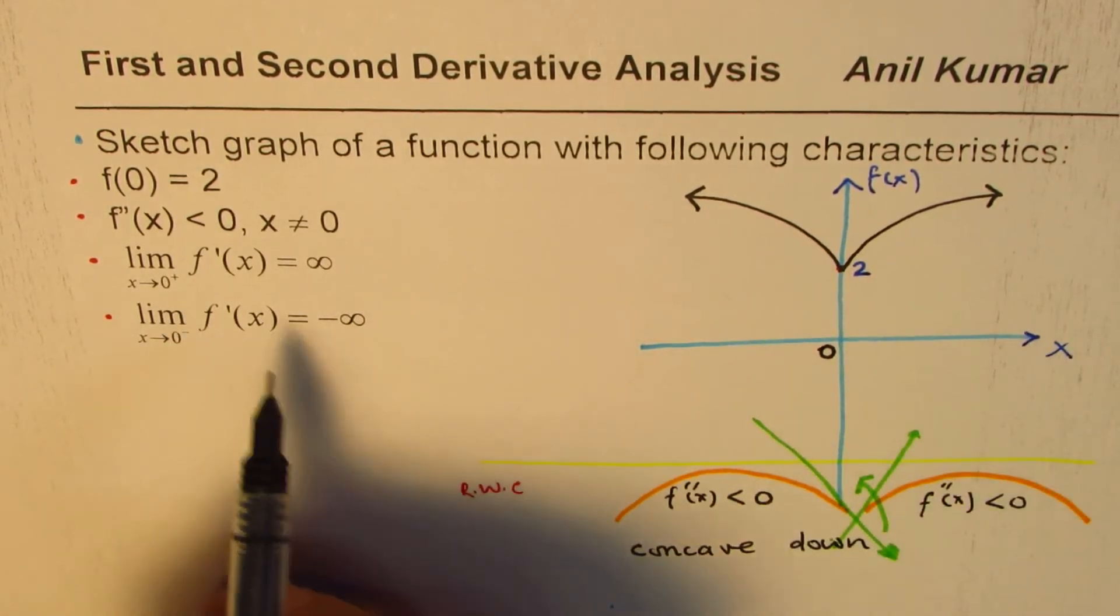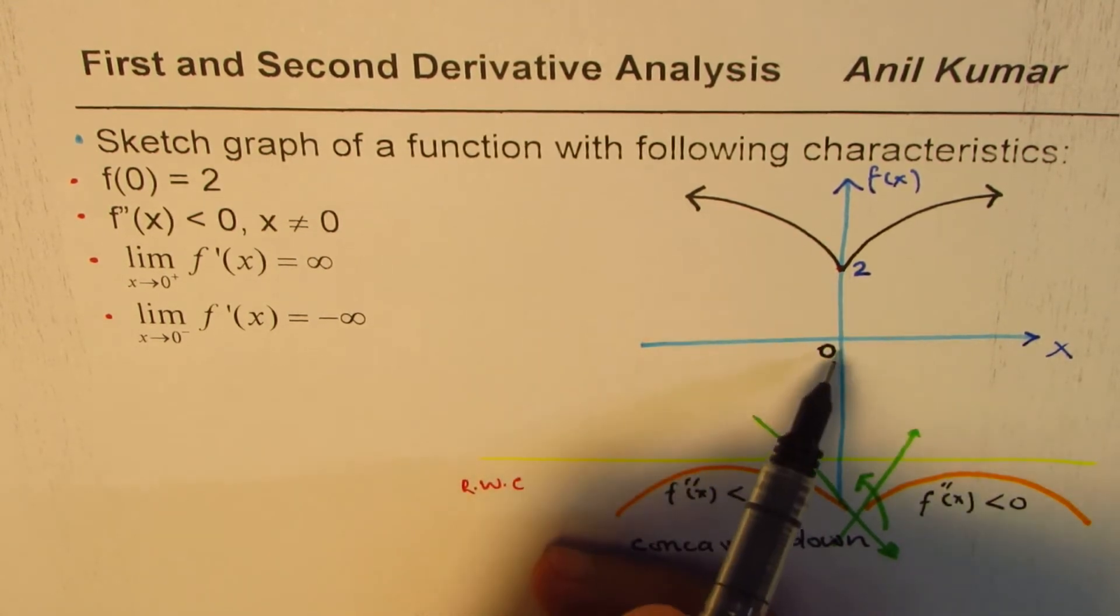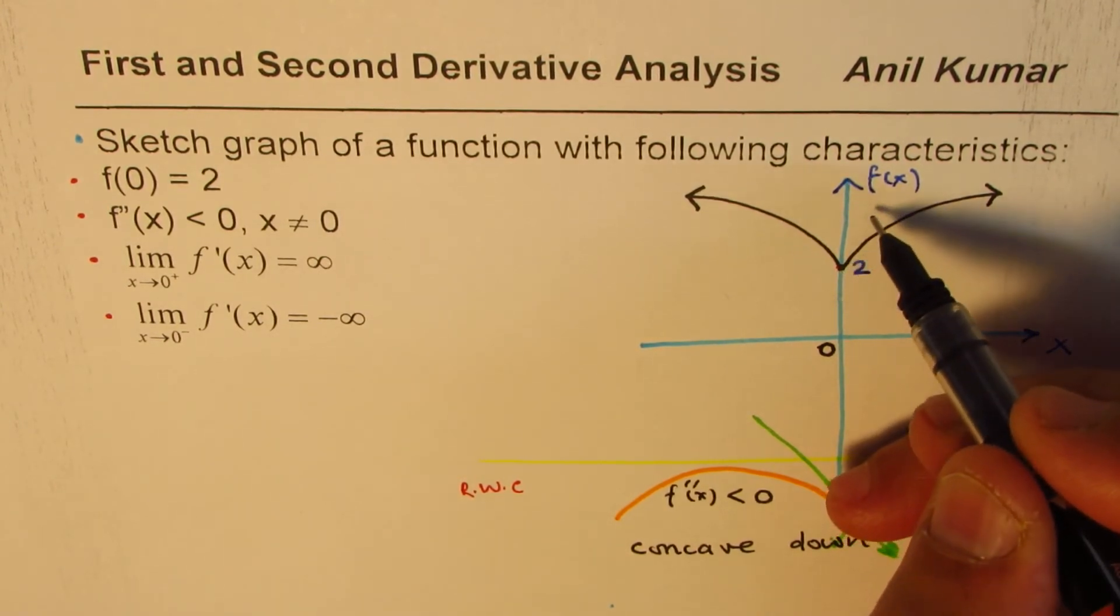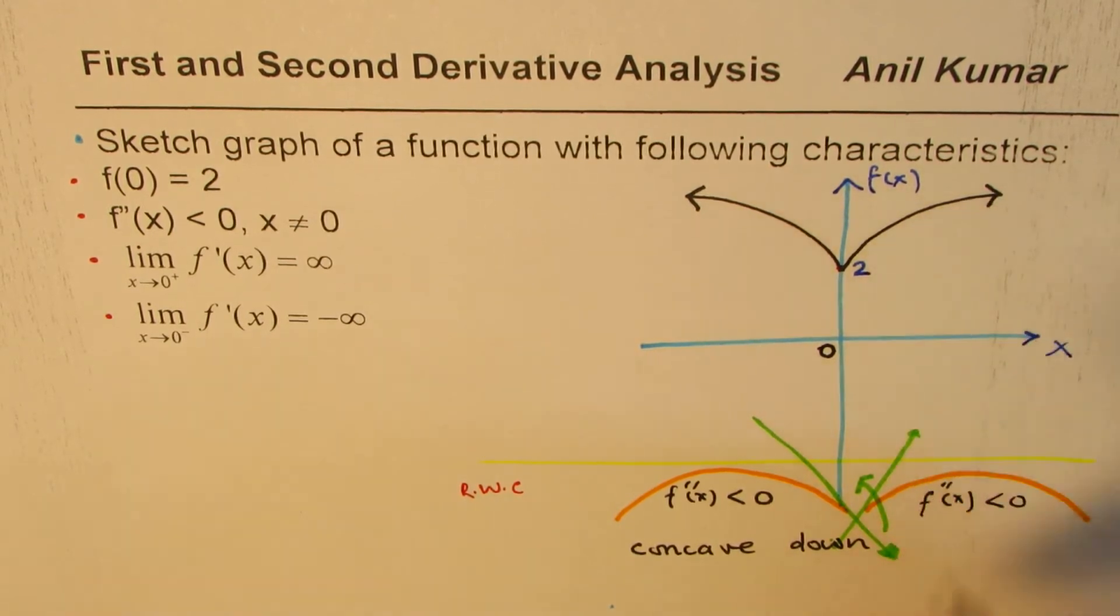And you can also see that the tangent is negatively large as you approach 0 from the left side. Here it is positively large when you approach 0 from the right side. So this graph satisfies all the conditions.